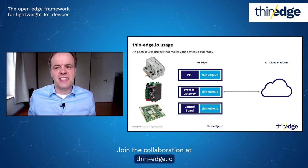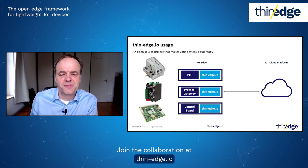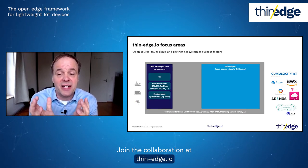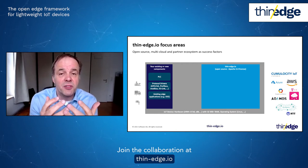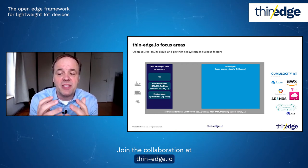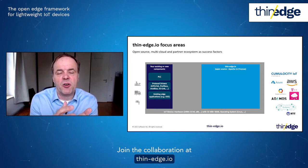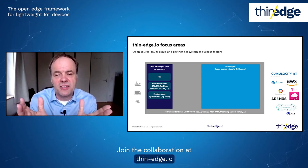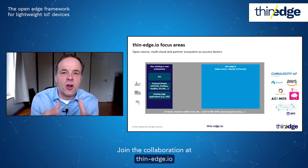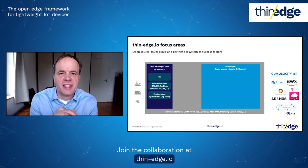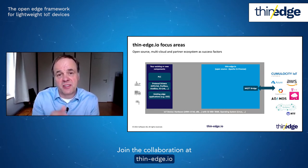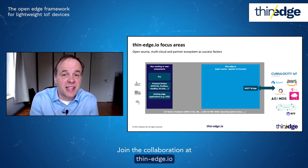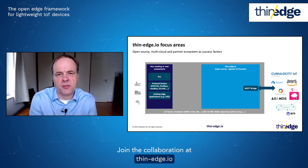Let's look at what is inside the thin-edge.io project. thin-edge.io can run on resource-constrained IoT devices — whether you have ARM v6, v7, or v8, or other processors, and whether you have only very small memory available or a big machine. To connect a device to different cloud platforms, there is a component called the MQTT bridge that provides an MQTT client to connect to all these platforms. MQTT is the standard IoT protocol now common in the industry and supported by all major cloud vendors.